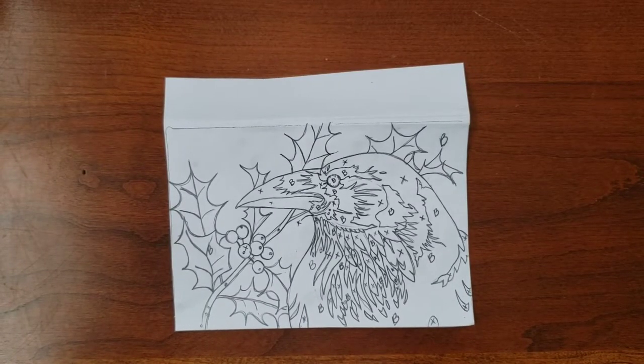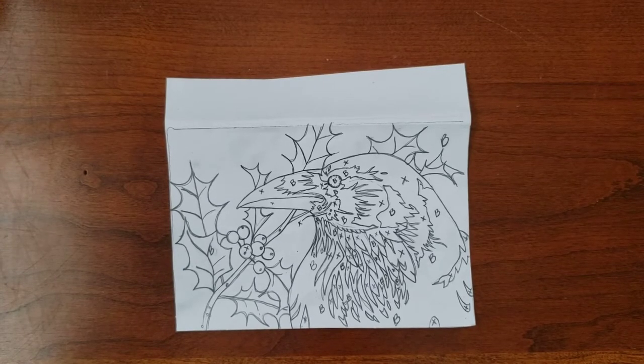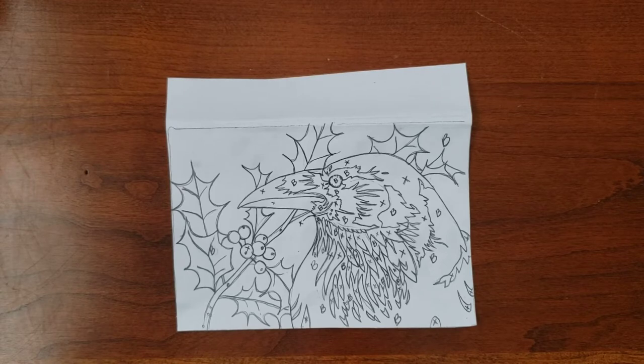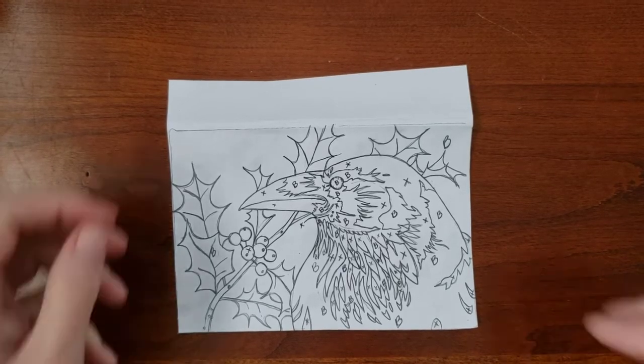This video demonstrates how to transfer a graphite drawing onto a lino block using a spoon. The drawing should be made using dark marks with a 2B or softer pencil. Smooth, medium weight paper works well for this. I'm using printer paper.